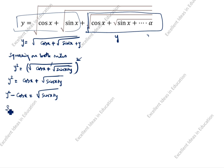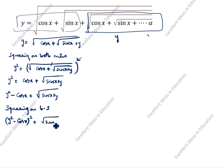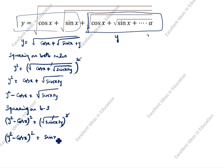You see again the square root is there, so we will remove the square root — squaring on both sides again. So (y squared minus cos x) whole squared equals root of sin x plus y, whole squared. This square root and square cancel, giving (y squared minus cos x) whole squared equals sin x plus y.